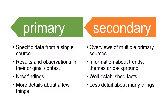Primary sources provide more detail about only a few things, whereas secondary sources will give you overviews of multiple primary sources, information about trends or themes, background information or well-established facts, and less detail about many more things.